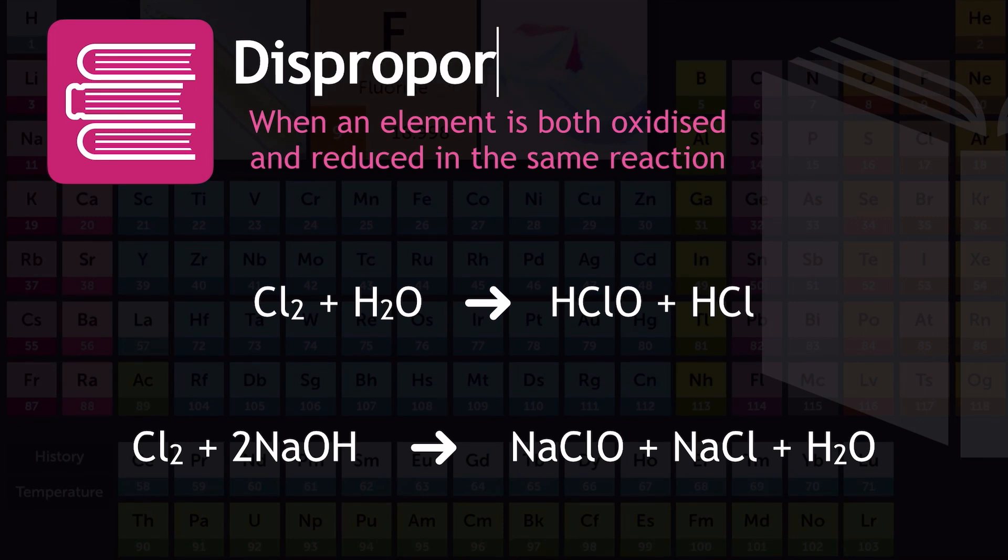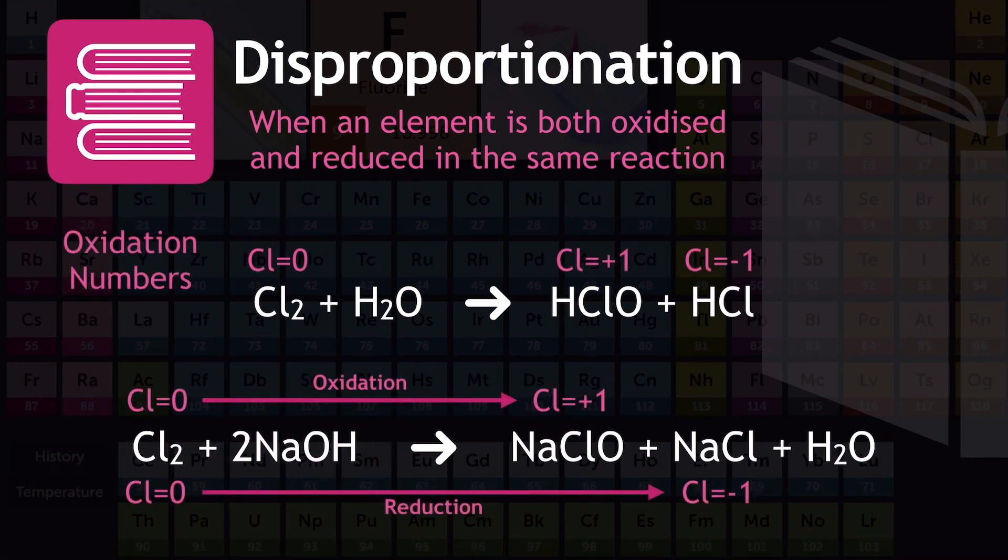Moving on now to disproportionation. Disproportionation, by definition, is when an element is both oxidized and reduced in the same reaction equation. And what we need to be aware of when it comes to the halogens topic is what happens when chlorine is added to water or when chlorine is added to sodium hydroxide. When chlorine is added to water, it produces HClO and HCl, as you can see with the top equation on screen. The oxidation numbers here show how disproportionation is taking place. Chlorine is going from zero in the Cl2 to plus one in the HClO, which is an oxidation, and also simultaneously to negative one in the HCl, which is a reduction.